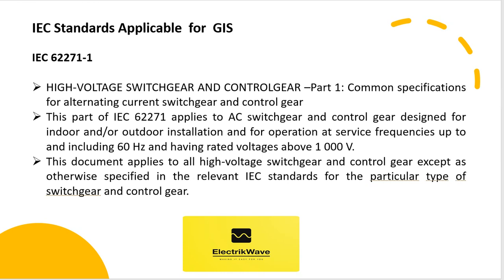IEC 62271-1: High Voltage Switchgear and Control Gear, Part 1, Common Specifications for Alternating Current Switchgear and Control Gear. This part of IEC 62271 applies to AC switchgear and control gear designed for indoor and/or outdoor installation and for operation at service frequencies up to and including 60 Hz and having rated voltages above 1000 V. This document applies to all high voltage switchgear and control gear except as otherwise specified in the relevant IEC standards for the particular type of switchgear and control gear.